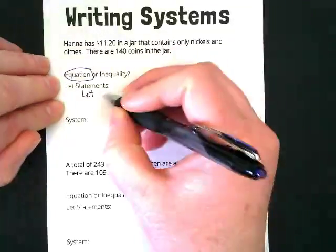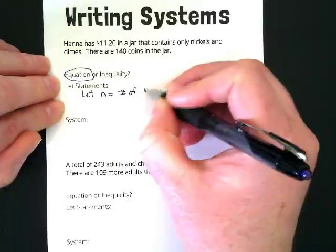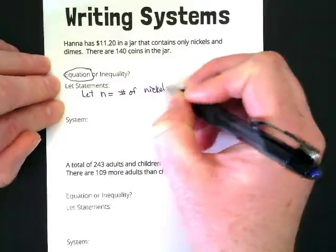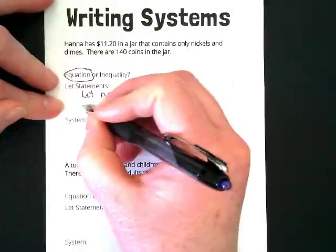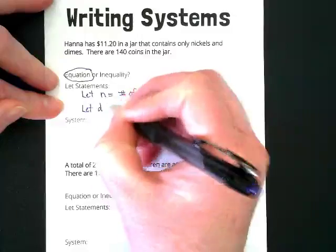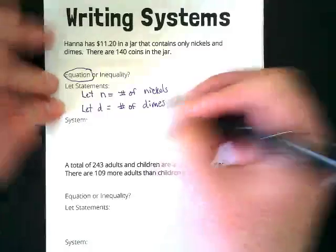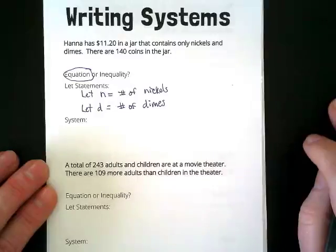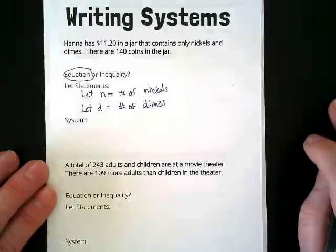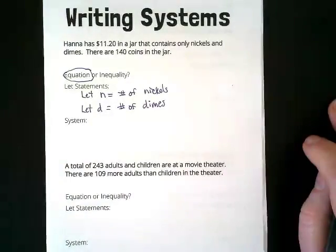In this case, we're going to let n equal the number of nickels. What do you guys think our second let statement will be? Let d equal the number of dimes. There's only two short sentences there. It's not a ton of information, but from that information, we can write two equations.